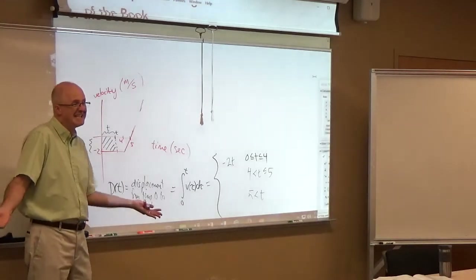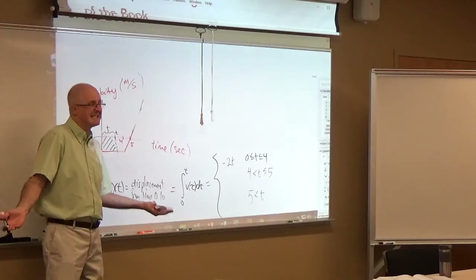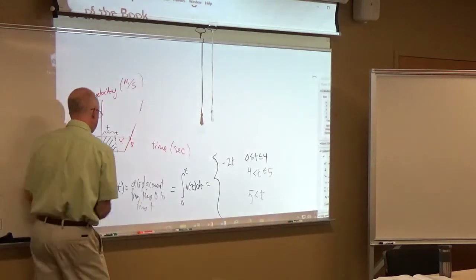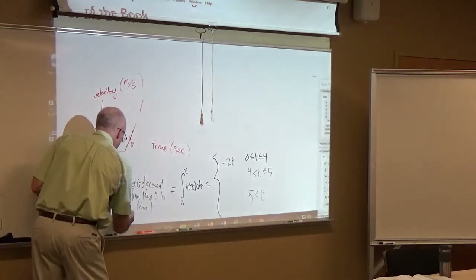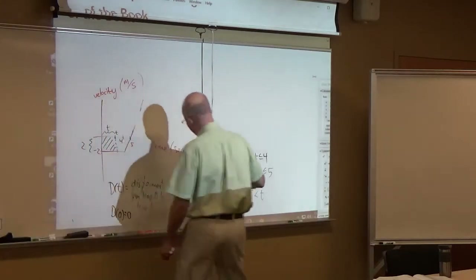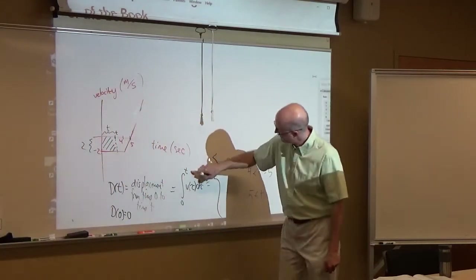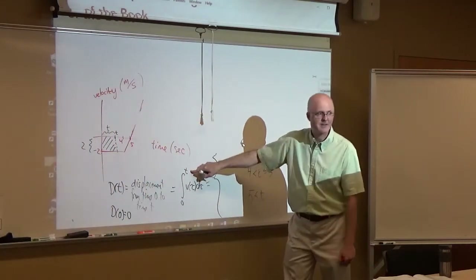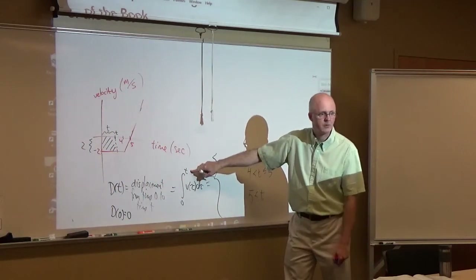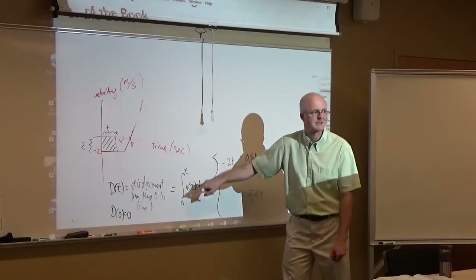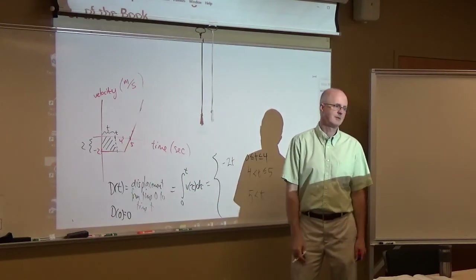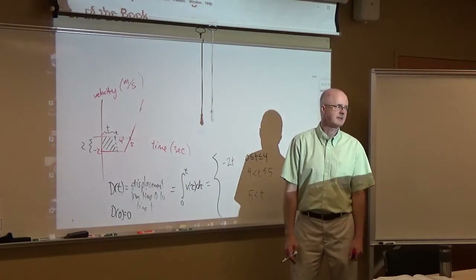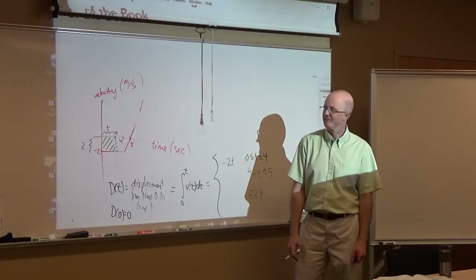Not too hard to guess, actually, if you think about the fact that the formula for this function between 0 and 4 is negative 2. Integrating negative 2, you get negative 2t plus c. c is going to be 0 because we are taking D of 0 to 0. And that matches the fact that if you plug in t equals 0, you'd be integrating from 0 to 0, which has got to be 0 — there's no area when you go from 0 to 0.